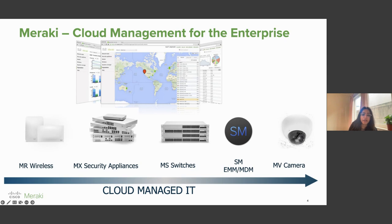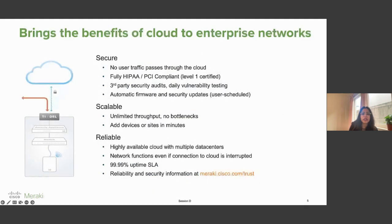Last but not least is the MV camera. The Cisco Meraki MV product family is a line of indoor and outdoor network cameras that are exceptionally simple to deploy and configure due to their integration into the Meraki dashboard and their use of cloud-augmented edge storage. The MV family eliminates traditional solutions' complex and costly hardware, removing the limitations typically placed on video surveillance deployments. Combined, these products bring the cloud to enterprise networks — secure, fully HIPAA and PCI compliant, scalable with thousands of devices added in minutes, and reliable with 99.99% uptime.